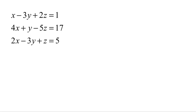We start with the system of three equations and three unknowns: x minus 3y plus 2z equals 1, 4x plus y minus 5z equals 17, and 2x minus 3y plus z equals 5.